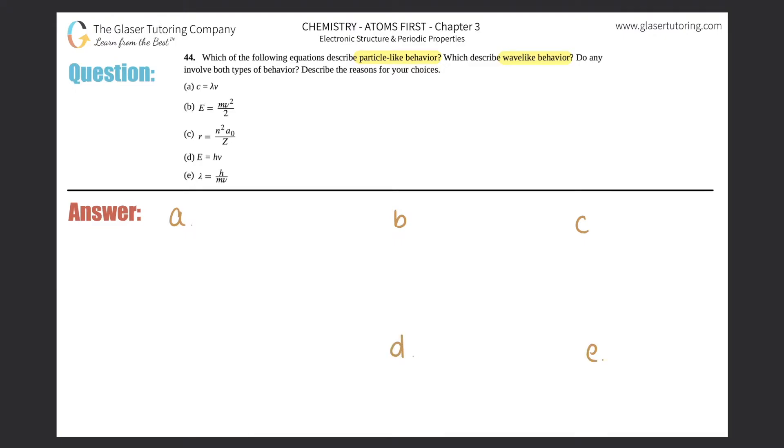So particle-like behavior is basically talking about a certain particle, right? And usually particles have mass. So if you're talking about something that has an actual mass to it, then it would be a particle-like behavior.